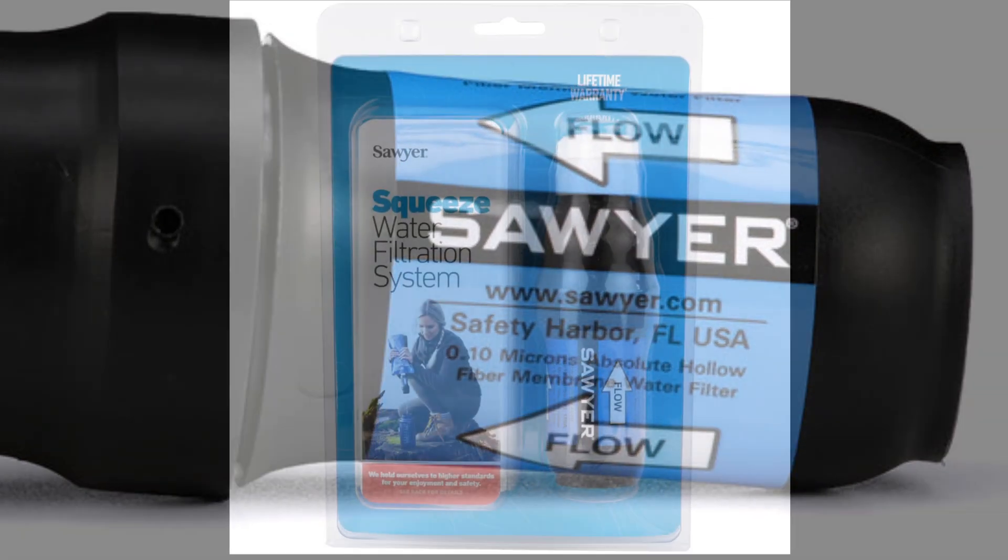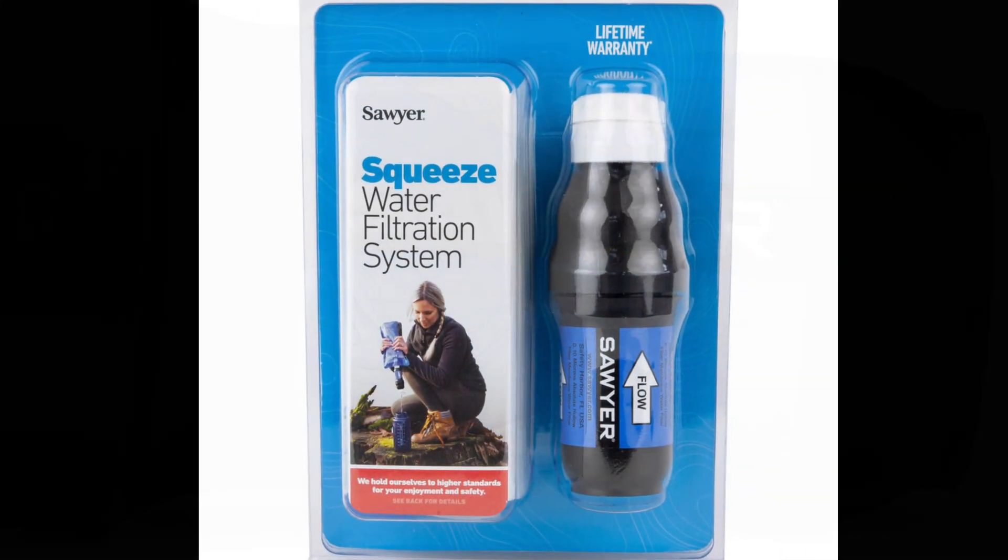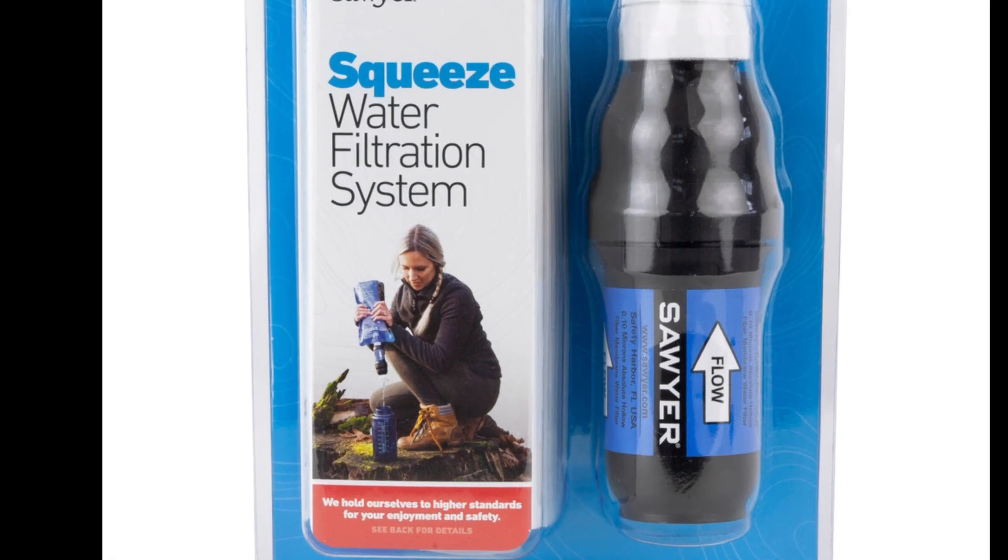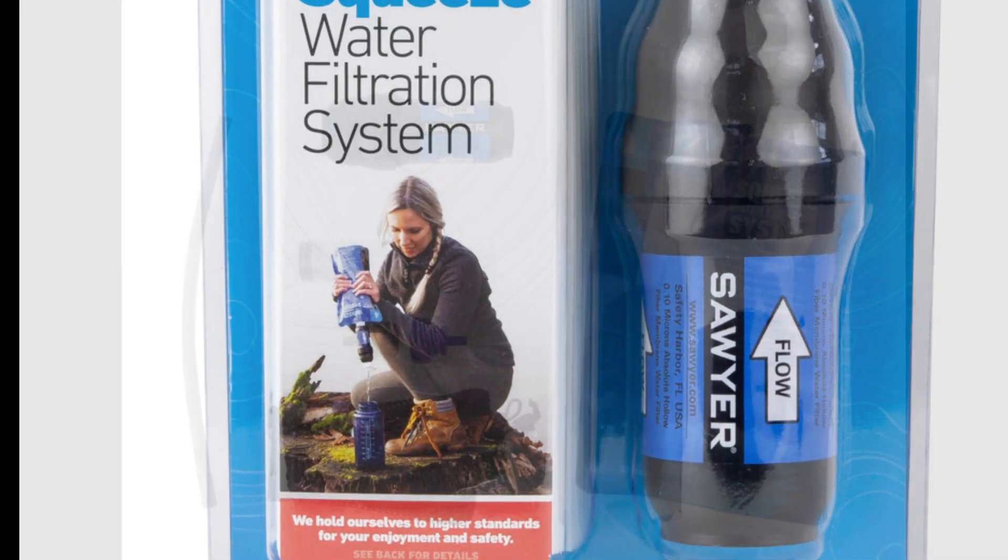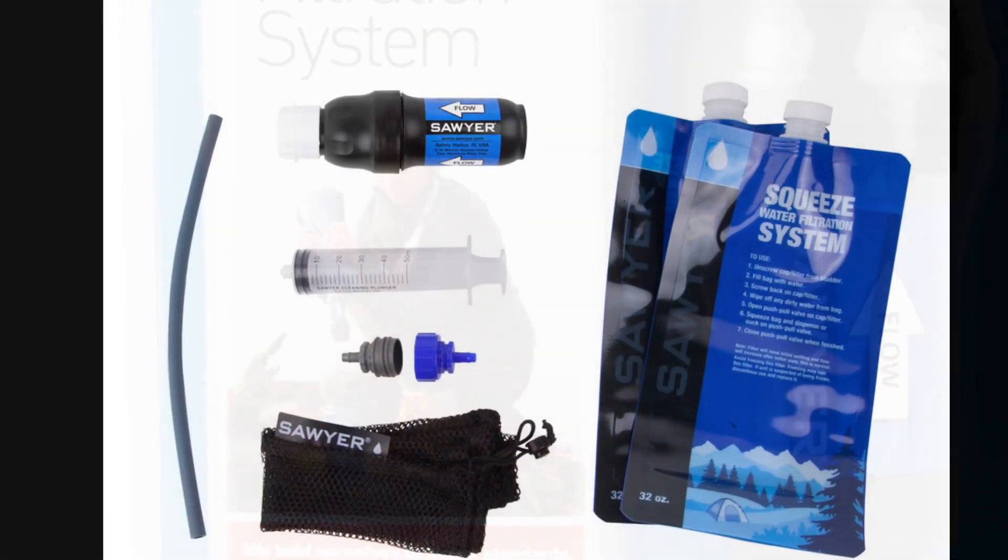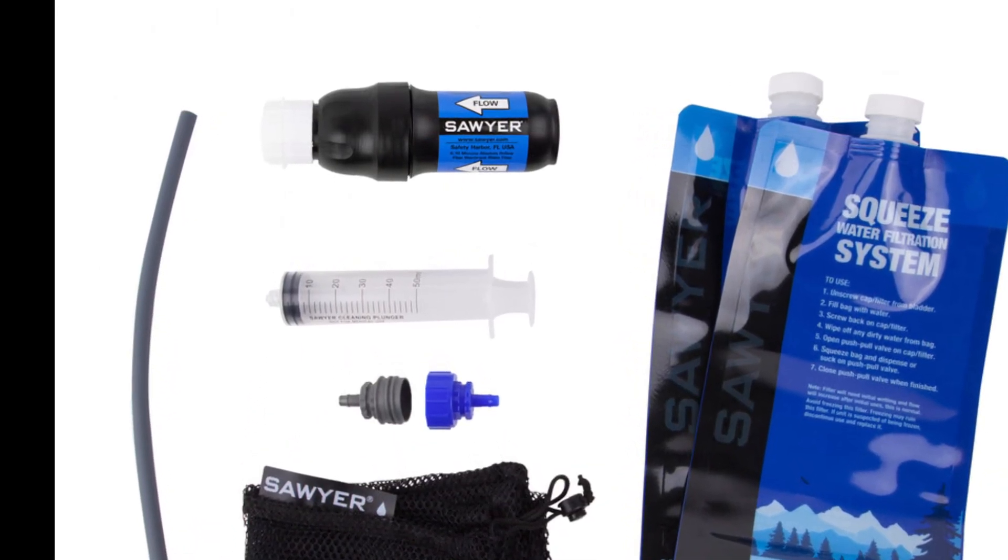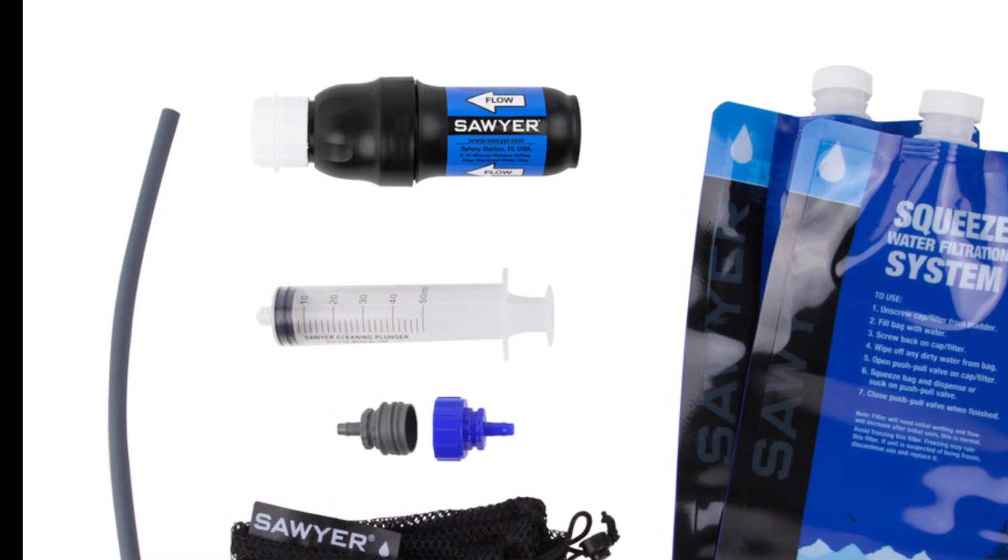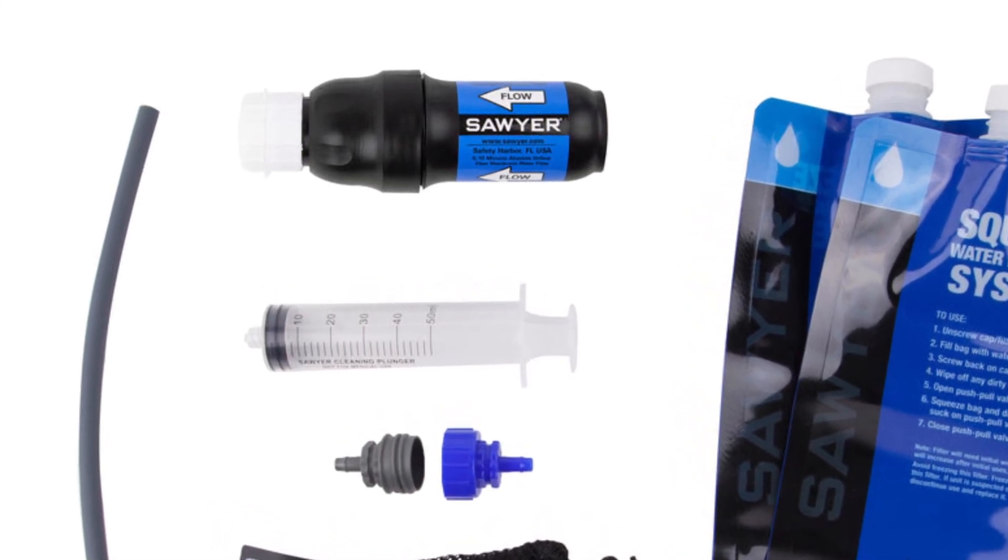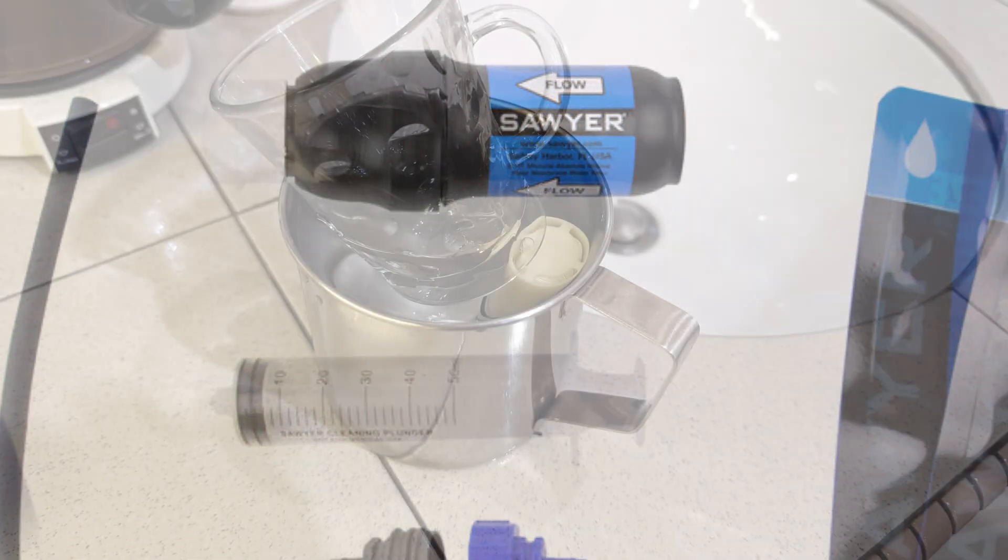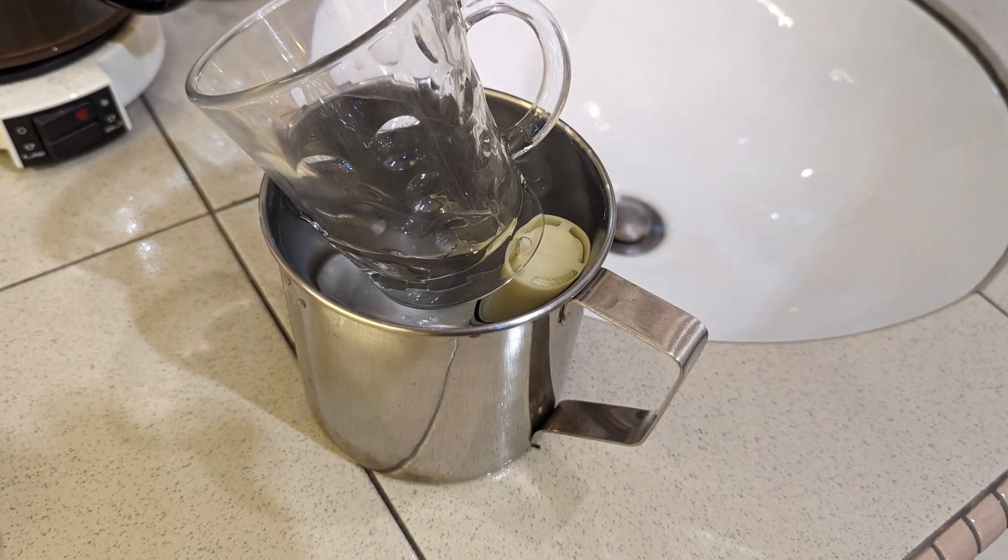For the uninitiated, this is what a Sawyer filter looks like. It typically comes in a clamshell case with at least one 16-ounce bag. If you're lucky you get a 32-ounce bag and a few accessories. You always get the big syringe for backwashing or backflushing. Sometimes you get the gray and blue attachments you see there with the straw—that's for gravity filtration where you just hang up the bag and let it flow by gravity into your clean water bottle.